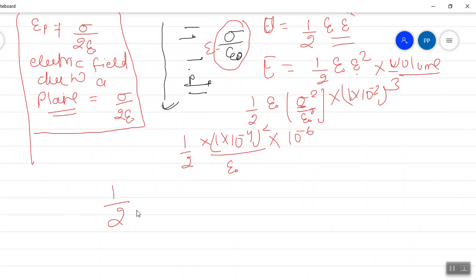If you solve this, we get one by two into eight point eight five into ten to the power. This becomes 8, this becomes 6, so minus four. But epsilon naught value is into ten to the power two. If you solve this, what we get is zero point zero five six four nine into ten to the power minus two.